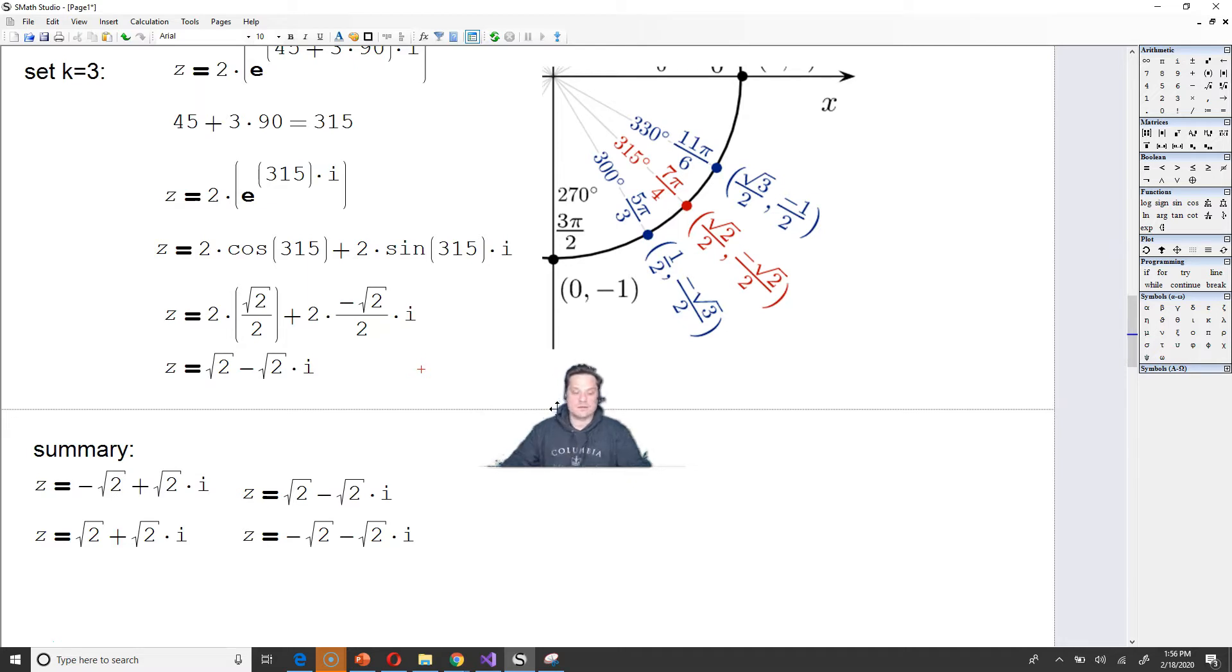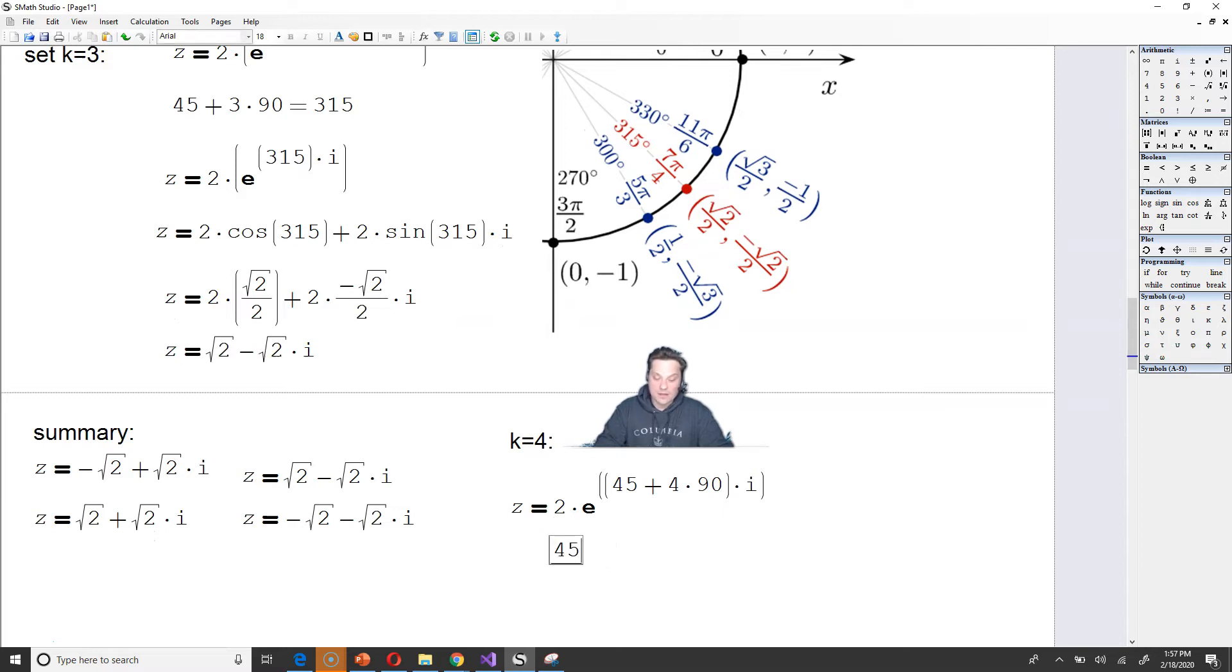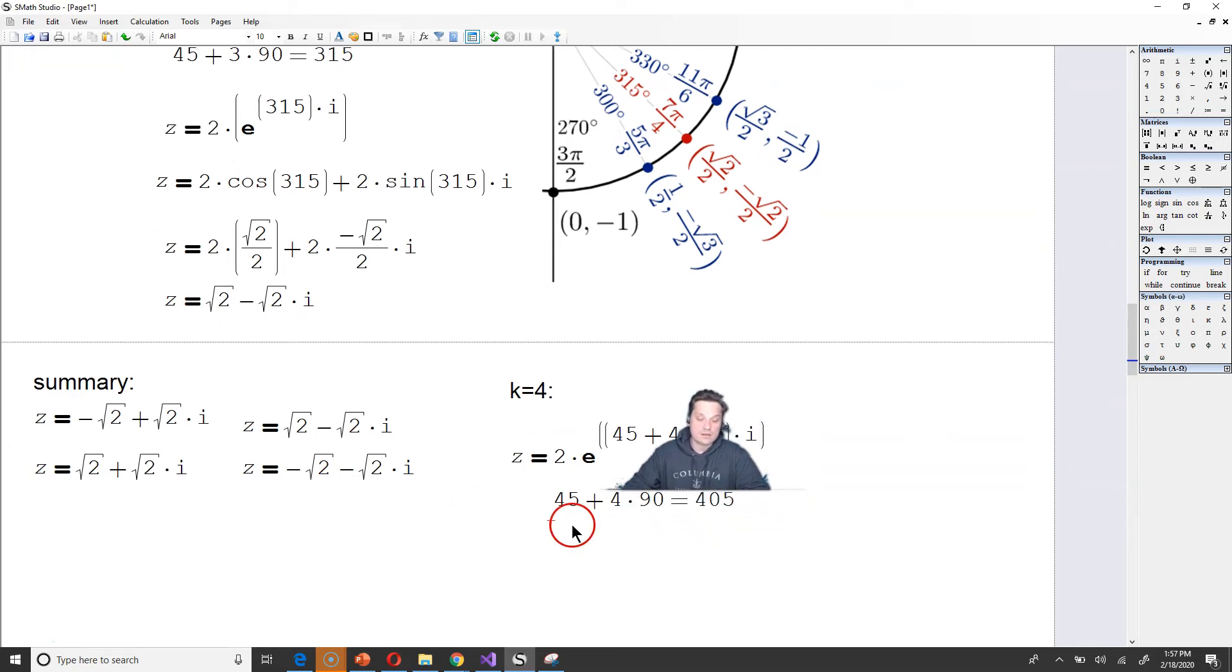What you don't want to do is the following. As a reminder, do not set k equal to 4. Because then that would be like doing it this way essentially. It would be giving you 2 times e raised to 45 plus 4 times 90 times the i. So that's if you're setting k equal to 4. So look, it's going to be 45 plus 4 times 90. But you see, that's giving a 405 degree angle. But that's more than 360 degrees. So then you would have to take 405 and subtract from it 360 to get 45 degrees. But remember that we already have 45 degrees. That was the first thing that we did.